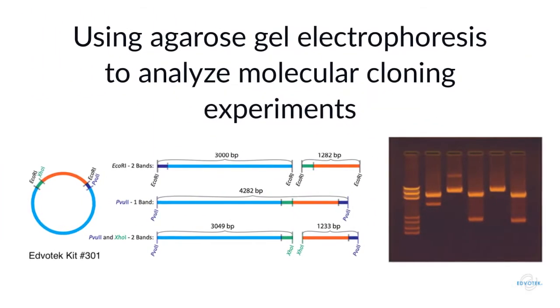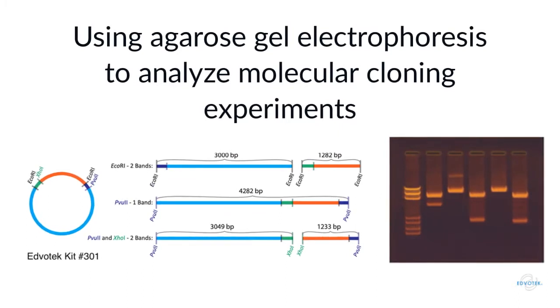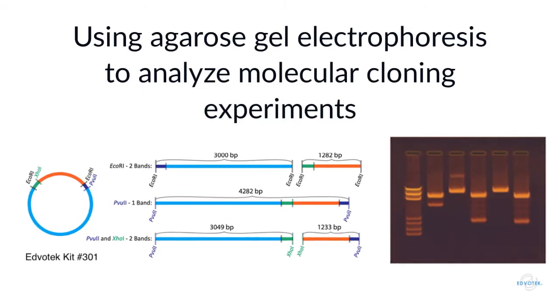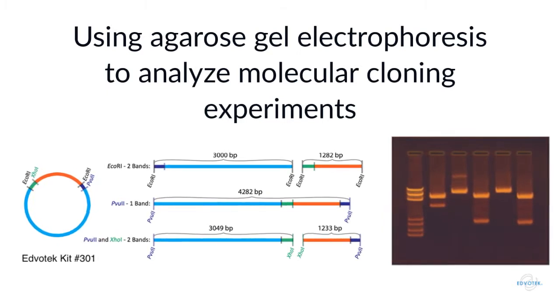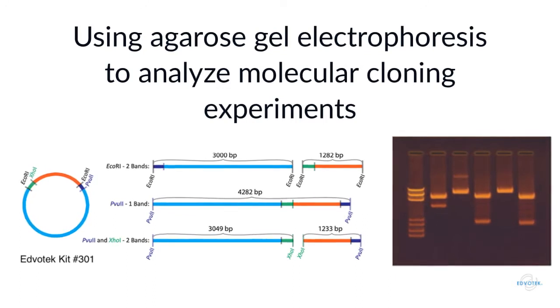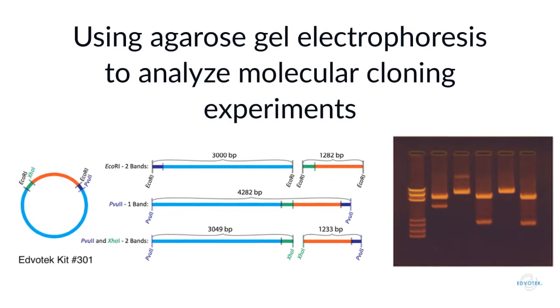Now, in many experiments like this one, which is Edvotech Kit 301, the success of the experiment depends on the size of the DNA fragments matching their theoretical size. For example, we can analyze our molecular cloning experiments using restriction enzymes. We use the DNA sequence information to predict the banding pattern of a restriction digest if our insert and our vector combine in a specific way, and then we perform the experiment to see what we get.